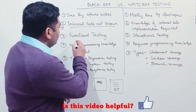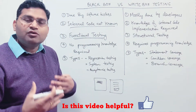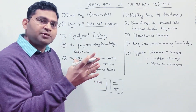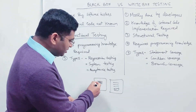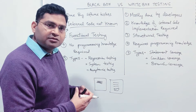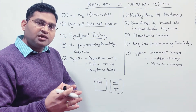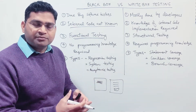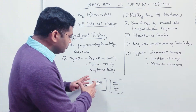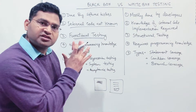Black box testing is functional testing — verifying the functionality or the requirement that is being implemented in the application. For example, registration functionality, adding items to the cart in an eCommerce website and then checking out and doing the payment — these are separate functionalities. In black box testing, you are just verifying the functional aspect.